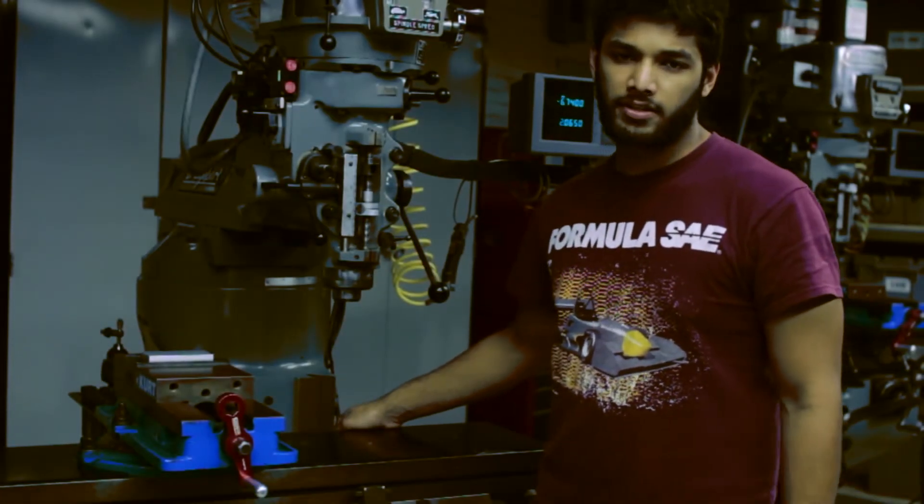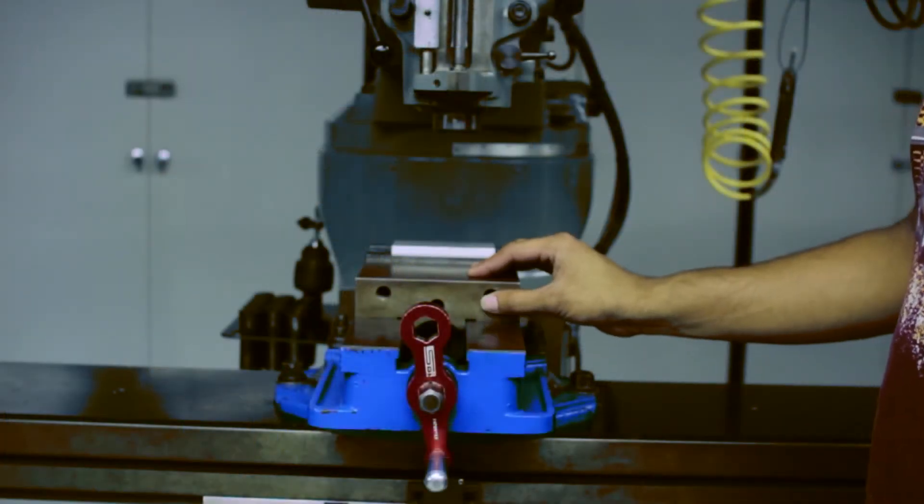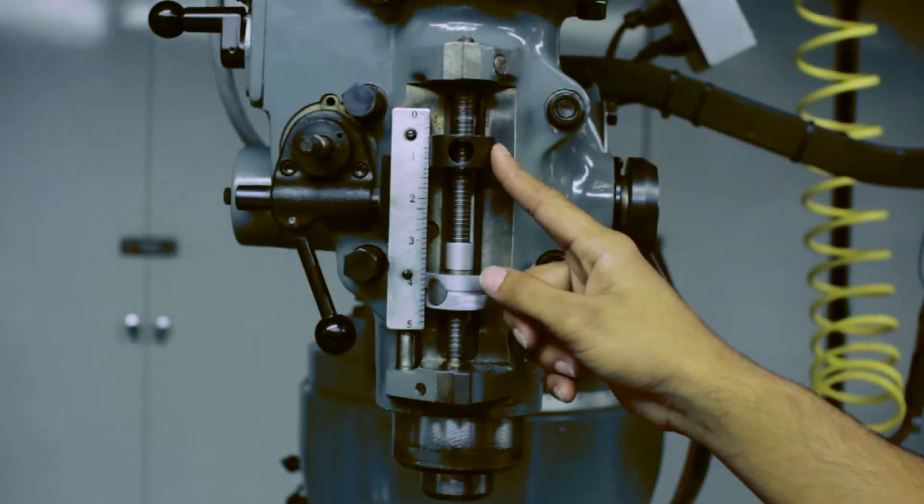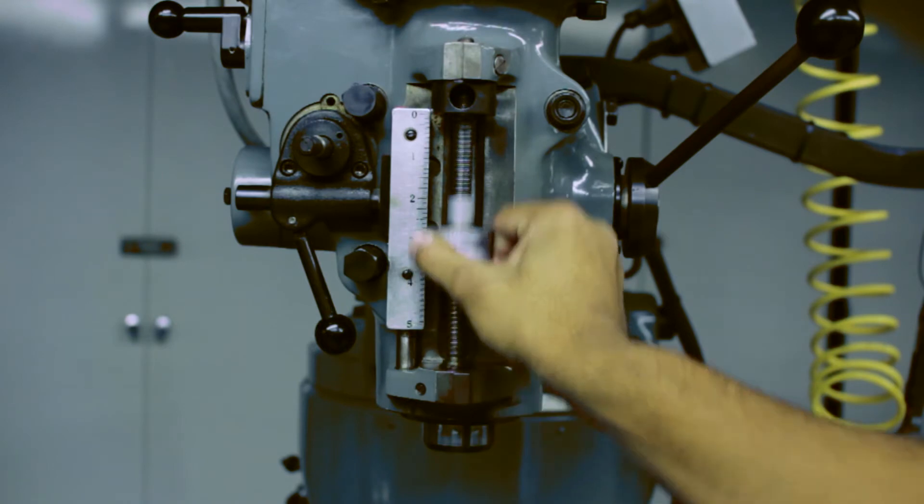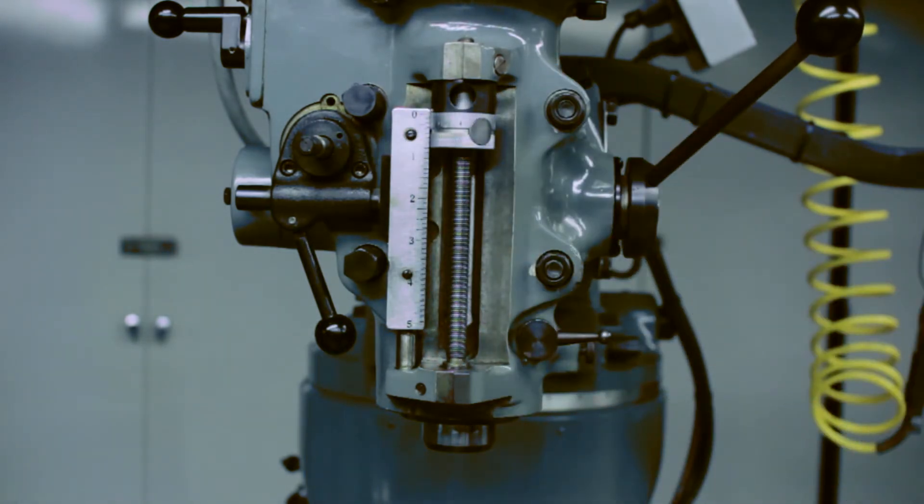Now that we've loaded the workpiece, we can load an end mill into the machine. Make sure your vise is away from the spindle area. It's absolutely critical that the quill is located in the uppermost position along with the spindle lock. If you do not do this, you will damage the machine.